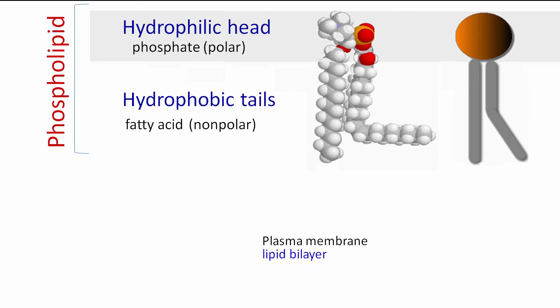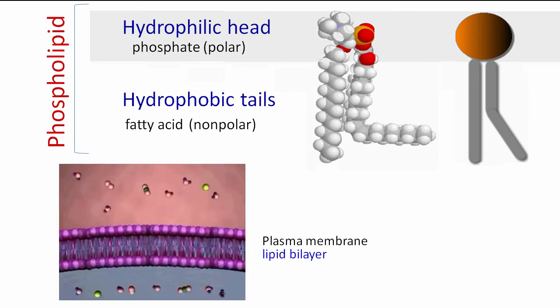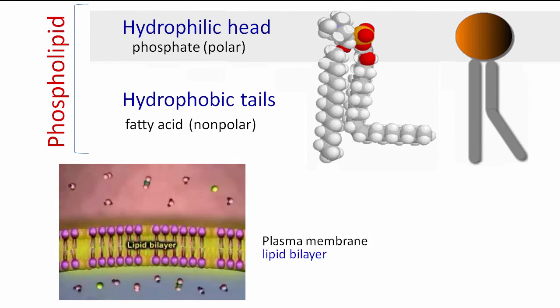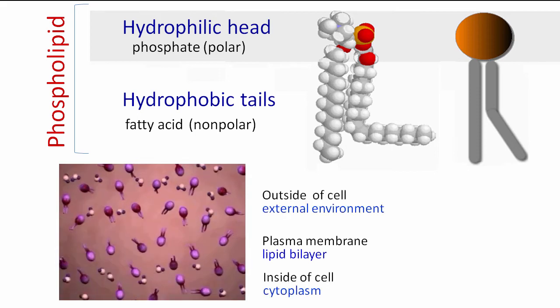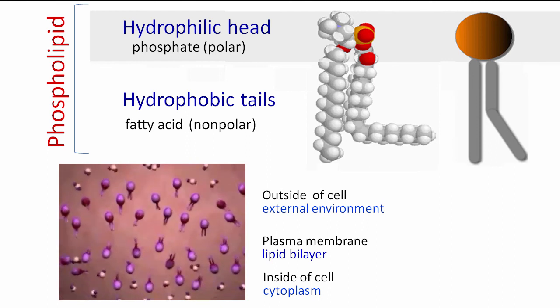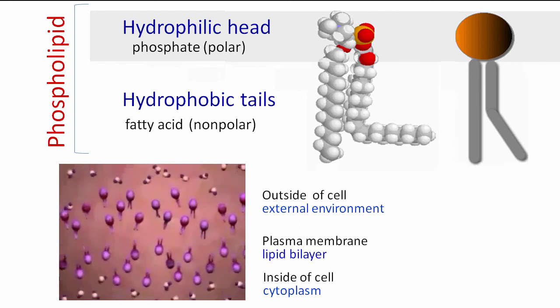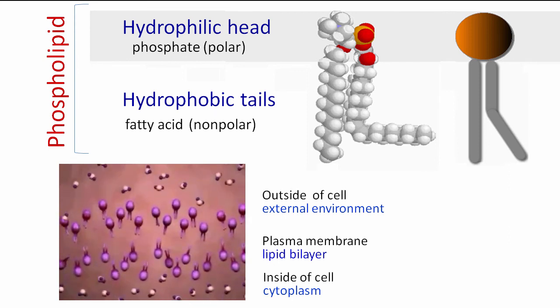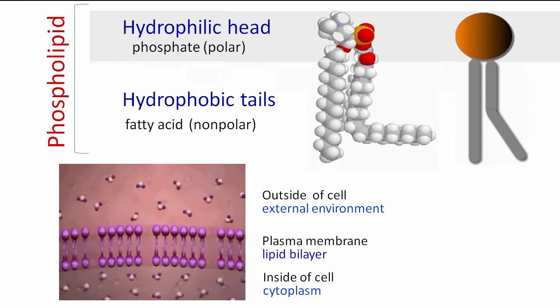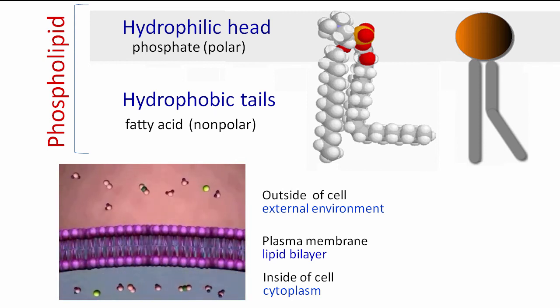So when sandwiched into two layers, the phosphate heads face the water environments outside and inside of the cell. The hydrophobic fatty acid tails are tucked toward the inner region of the membrane itself, shielded away from the water. In this way, water is excluded from the inner portion of the membrane and will not freely move across. So the internal cytoplasm is functionally separated from the external environment.